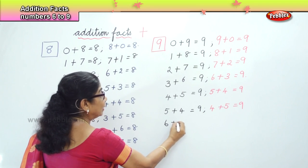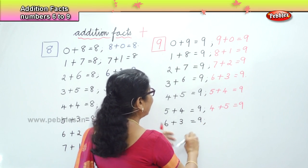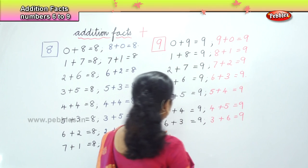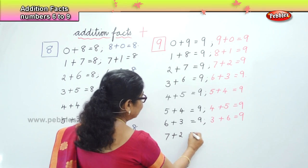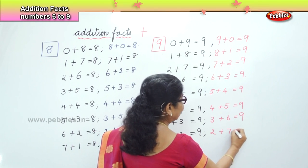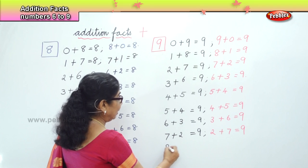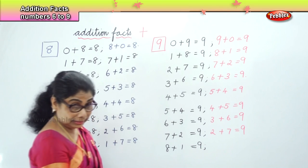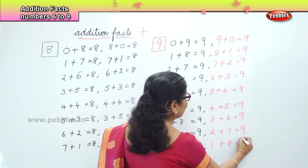Next: 6 plus 3 is equal to 9. And the reverse: 3 plus 6 is also equal to 9. Then 7 plus 2 is equal to 9, and the reverse: 2 plus 7 is also equal to 9. Next: 8 plus 1 is equal to 9.